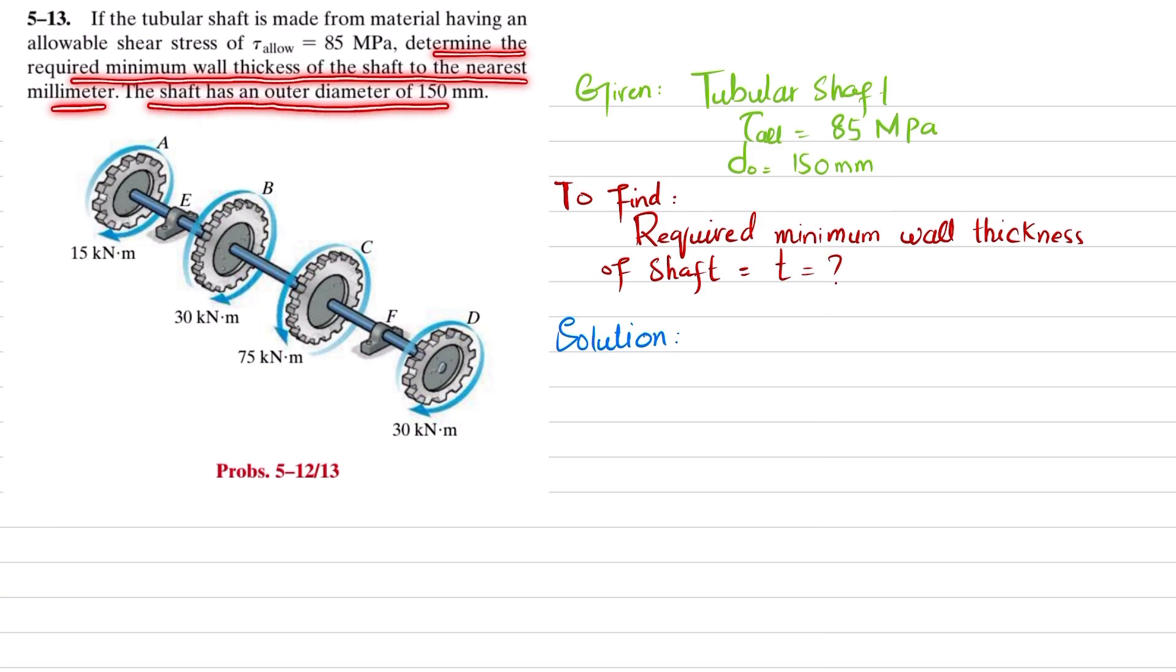Now you can see that this shaft is given as a tubular shaft. All the loadings have been mentioned at these gears. You have been given that this shaft is made of material having allowable shear stress is 85 megapascal and outside diameter is 150 millimeter.